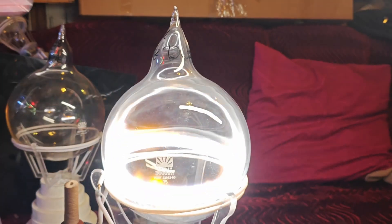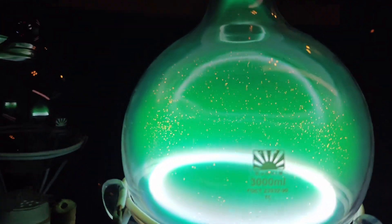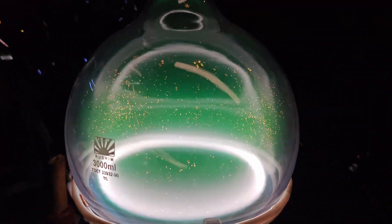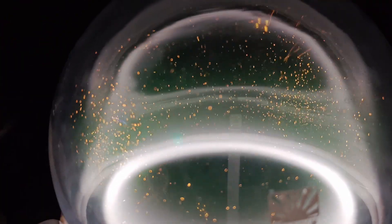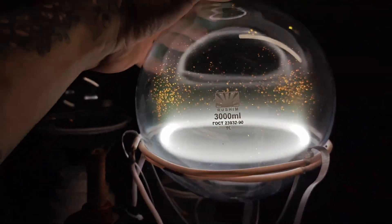We can steer the crystal. Increase the drive frequency and the trap tightens. Lower it and the structure relaxes. Raise the power and the grains levitate higher. Reduce it and they settle. Adjusting the pressure changes how often particles collide. Shift the settings and the crystal melts into a snowstorm, then freezes back into rings and domes.